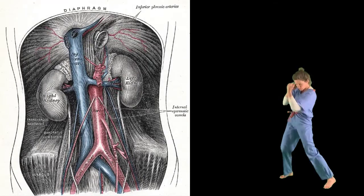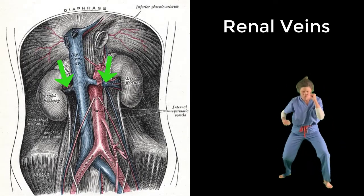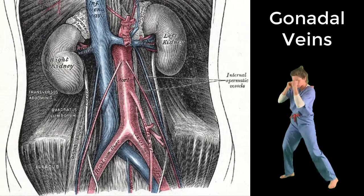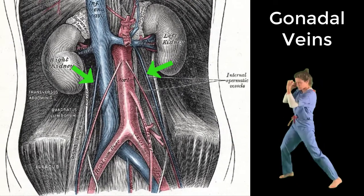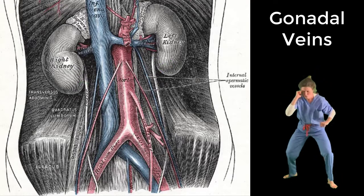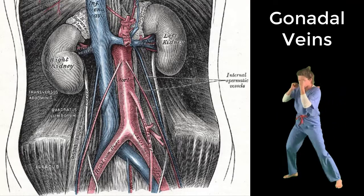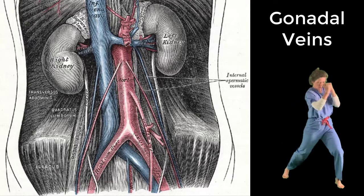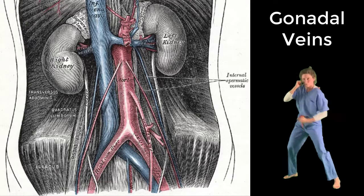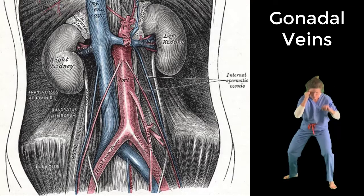First are the renal veins, which are paired veins that drain blood from the kidneys directly into the inferior vena cava. Second are the gonadal veins, which include the testicular vein in males and the ovarian veins in females. Both the testicles and the ovaries begin development within the abdomen and then descend into their proper location — the scrotum or the pelvis — dragging their blood supply with them. Thus, the gonadal veins originate more superiorly than their actual positioning.